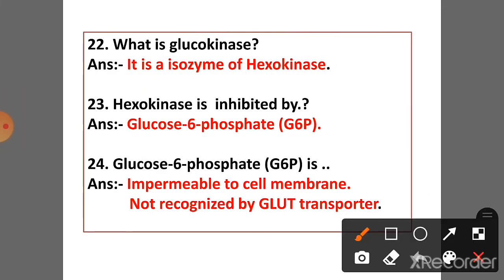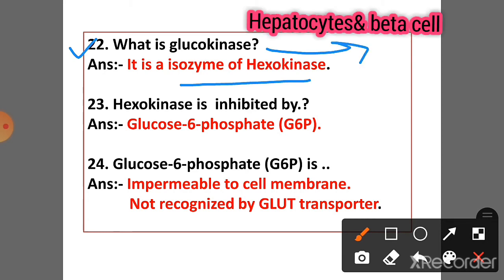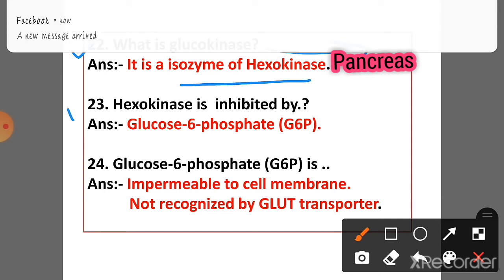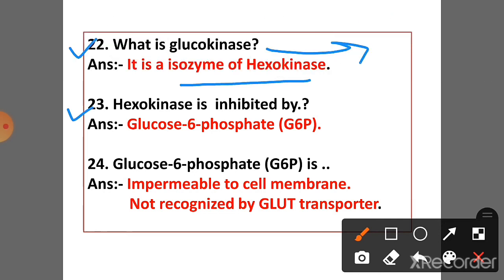Question 22: What is glucokinase? Answer: It is an isoenzyme of hexokinase, present in the liver and beta cells of the pancreas. Question 23: Hexokinase is inhibited by glucose-6-phosphate.